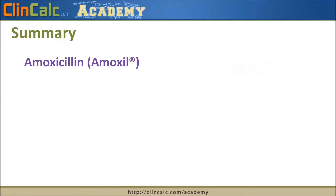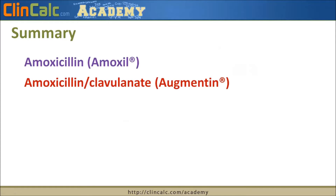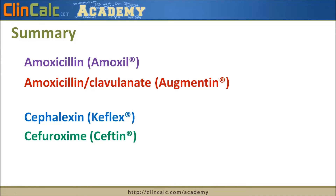To summarize, we talked about two penicillin-based antibiotics: amoxicillin (Amoxil) and amoxicillin with clavulanate (Augmentin), which uses a suicide inhibitor and provides broader spectrum activity. For cephalosporins, cephalexin (Keflex) is first-generation, cefuroxime (Ceftin) is second-generation, and cefdinir (Omnicef) is third-generation. As we get to a later generation, we have better gram-negative coverage.